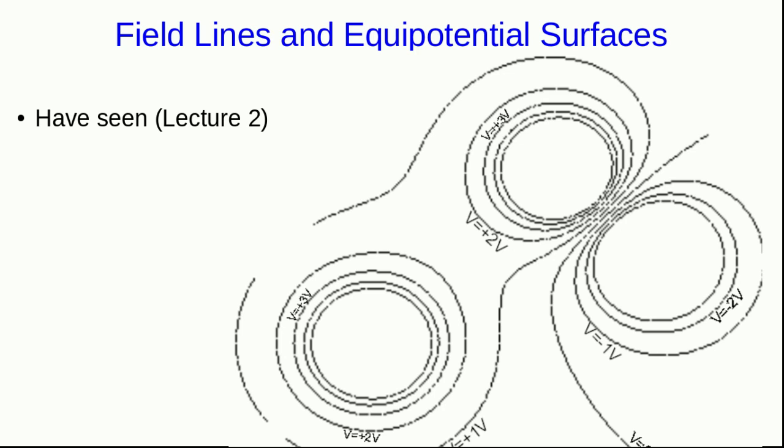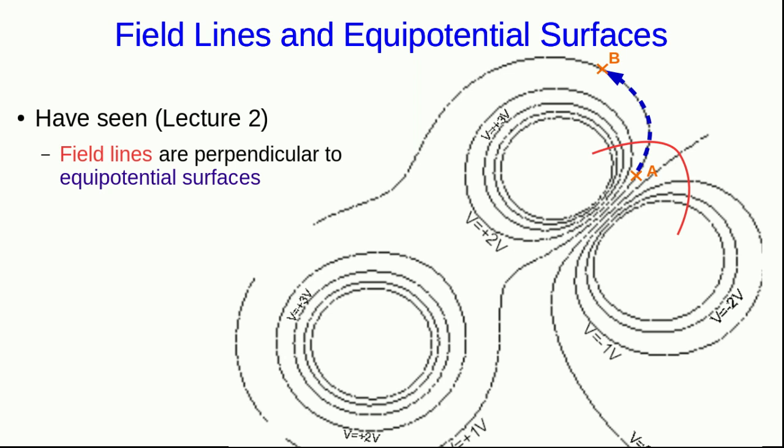We're going to get more quantitative about some relationships we already saw in Lecture 2. In that lecture, we saw that if we connect any two points that are on the same equipotential surface by a path, the electrostatic work along that path must be zero, and that tells us that the electric field is perpendicular to the equipotential surface, and so field lines are always perpendicular to equipotential surfaces.